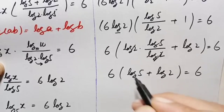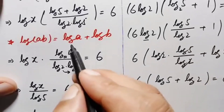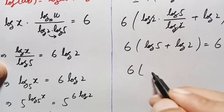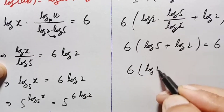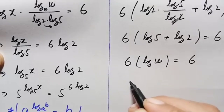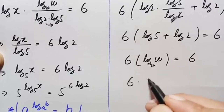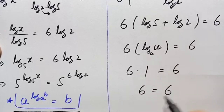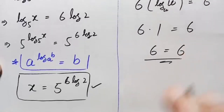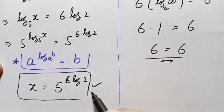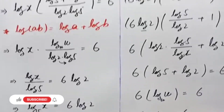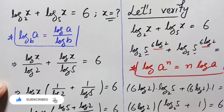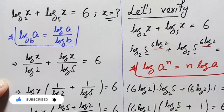Using the product rule, log of 5 plus log of 2 equals log of 10, which equals 1. So the expression becomes 6 times 1 equals 6, which equals the right hand side. Both sides are equal, confirming that x equals 5 raised to the power 6 times log of 2 is the exact correct answer. Thanks for watching — don't forget to subscribe for more step-by-step math videos.